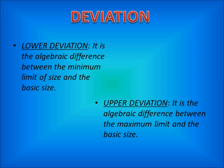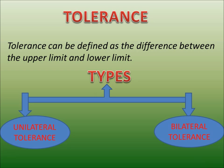What is deviation? Deviation is the difference between a size and the basic size. Lower deviation is the difference between the lower limit and the basic size, and upper deviation is the difference between the higher limit and the basic size. Tolerance is the difference between the upper limit and the lower limit.